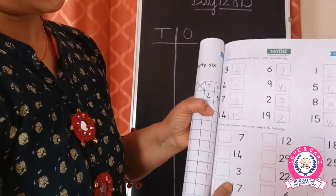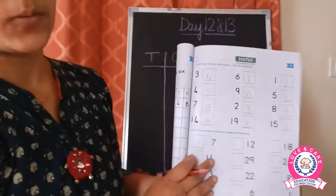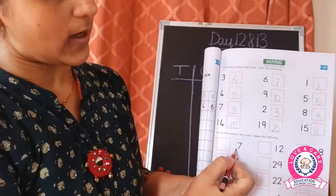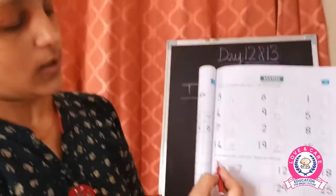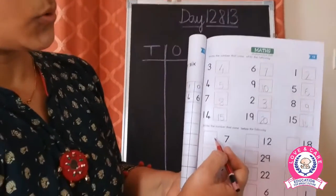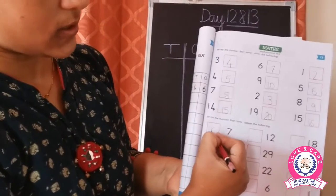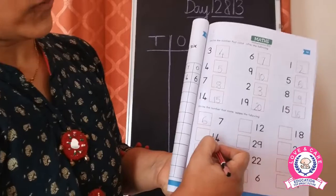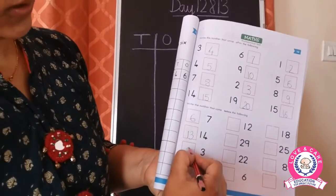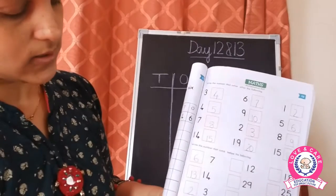Now here we are writing the before number. Before number — the given number is seven. Number five, three four five, five six seven, seven to ten, seven two five. That was number six. One four — fourteen. Here comes thirteen, so the number before thirteen is twelve. Seventeen, so the number here will be sixteen.